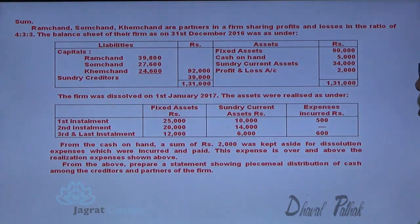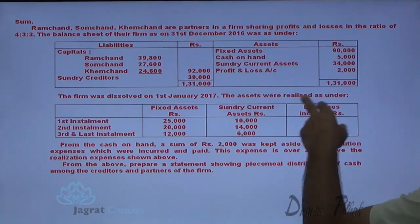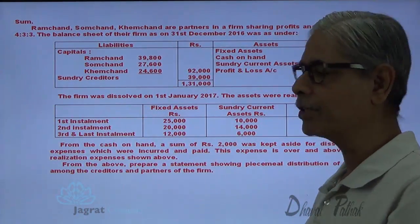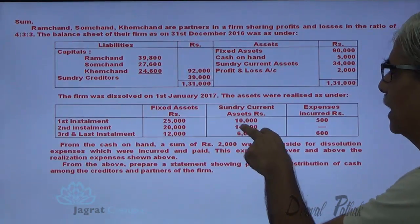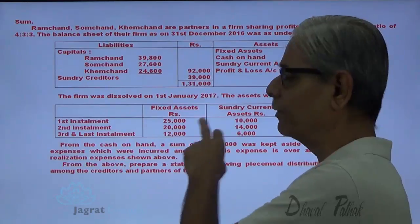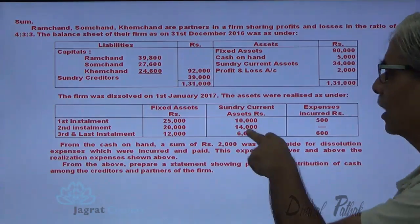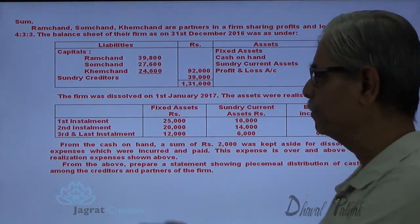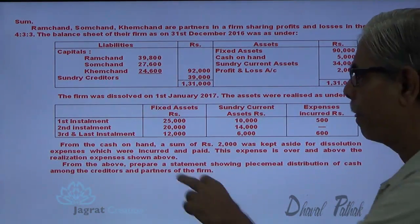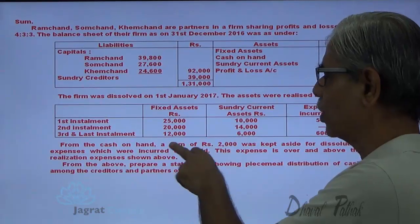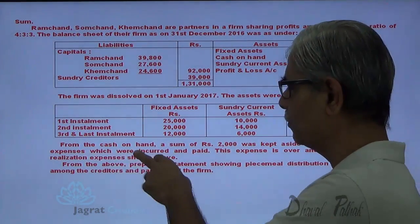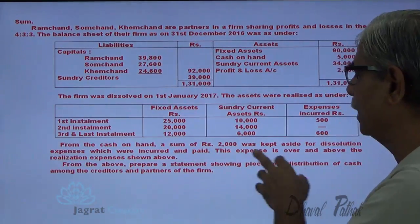The firm was dissolved on 1st January 2017. Assets were realized as follows: First installment — fixed assets realized 25,000, current assets 10,000, expenses incurred 500. Second installment — fixed assets realized 20,000, current assets 14,000, no expenses. Last installment — 12,000 realized, 600 expenses. From the cash on hand, 2,000 was to be kept aside for dissolution expenses, which were incurred and paid.